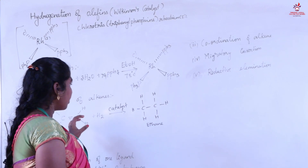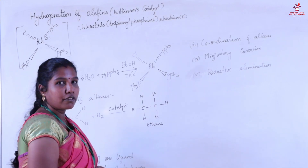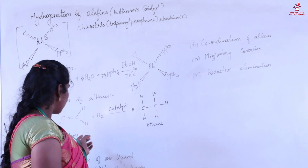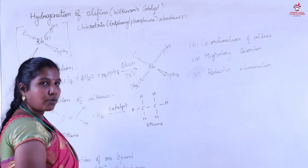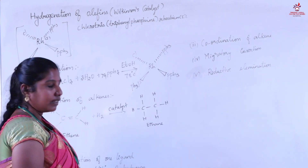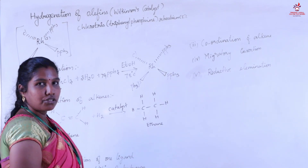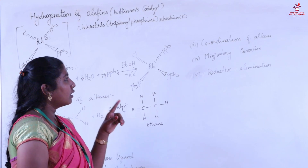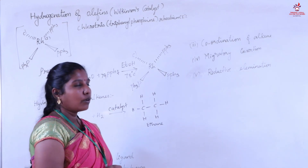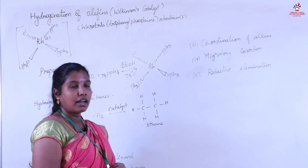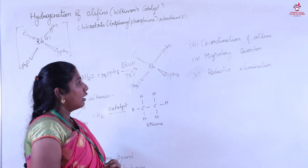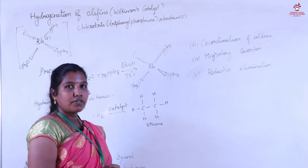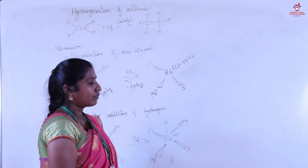This reaction undergoes a five-step mechanism. The first step is dissociation of one ligand. The second step is oxidative addition of hydrogen. The third step is coordination of alkene. The fourth step is migratory insertion. The fifth step is reductive elimination.